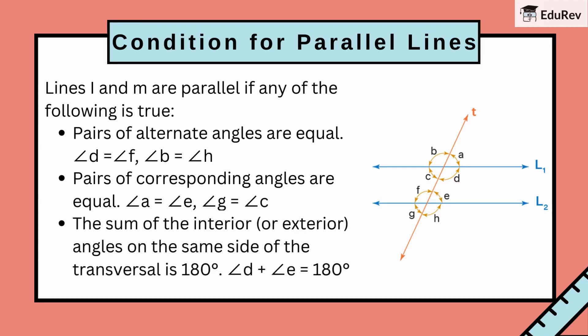The sum of the interior, or exterior, angles on the same side of the transversal is 180 degrees. That is, angle D plus angle E is equal to 180 degrees.